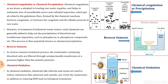In chemical coagulation or precipitation, suspended solids which are not readily settleable have chemicals added to initiate flocculation. Due to the addition of chemicals, floc formation occurs, and since this floc is heavier than water it starts settling at the bottom. The supernatant water is taken from the top and sludge is removed readily. This is called chemical coagulation or precipitation.